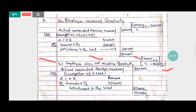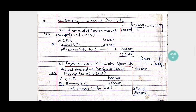If the employee does not receive the gratuity, the actual commuted pension received by Mr. Vijay is rupees six lakh. Less exemption is allowed under Section 10, Sub-section 10A. Here the exemption is the full value of pension multiplied by one-half: nine lakh into one-half gives four lakh fifty thousand. Out of the two — six lakh and four lakh fifty thousand — whichever is the least, that is four lakh fifty thousand, is allowed as exemption.